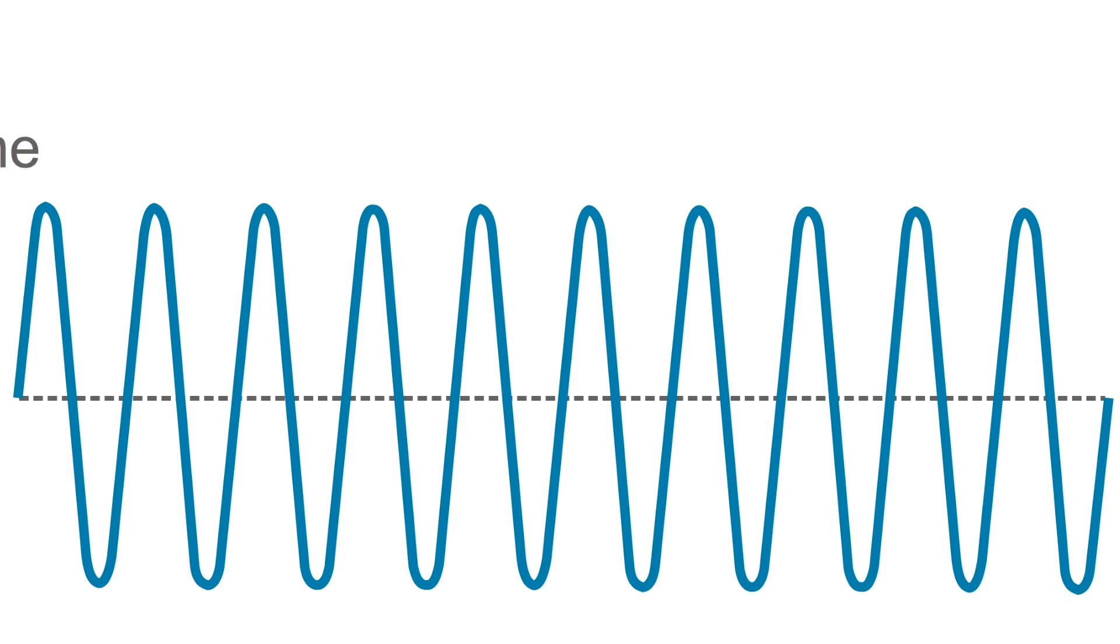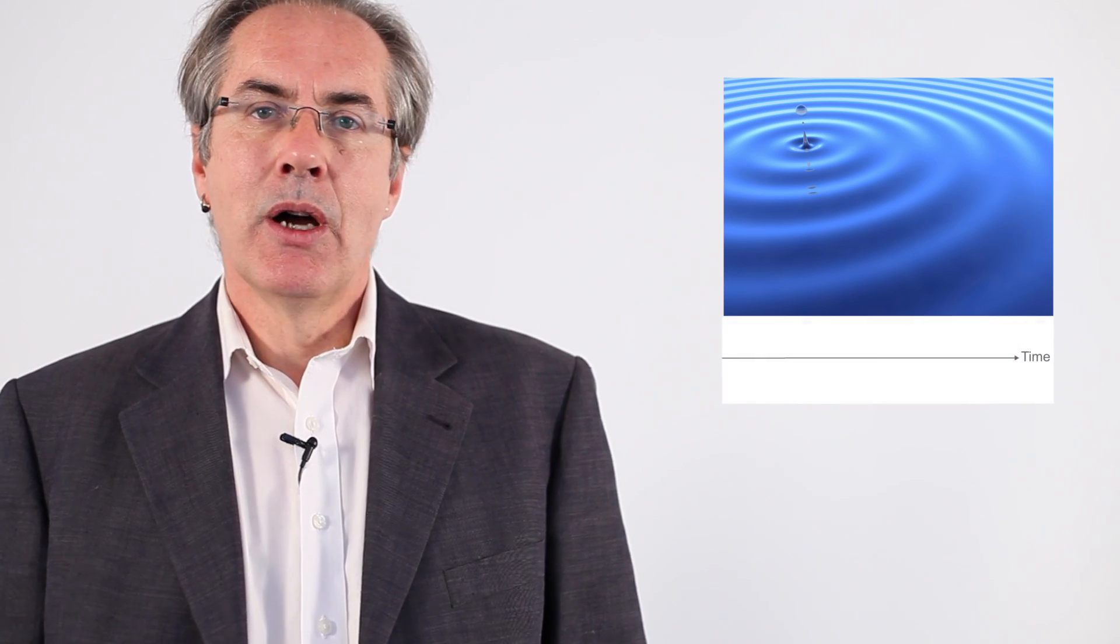If we were to count the number of waves passing by us in a single second, that would give us a frequency, because frequency is just number of waves per second. Imagine you were videoing the ripples on a pond after you threw a stone into it and you picked some point and you counted all the little ripples that passed through that point. That's a frequency per second. So we identify frequency as number of waves per second, or cycles per second, or to use the modern term, hertz.